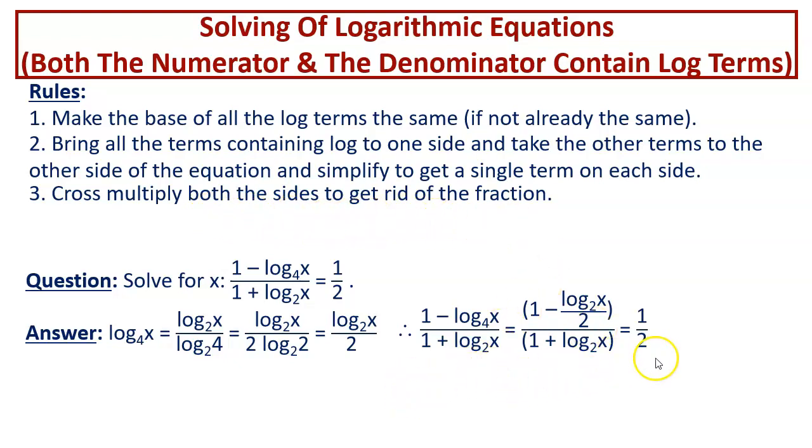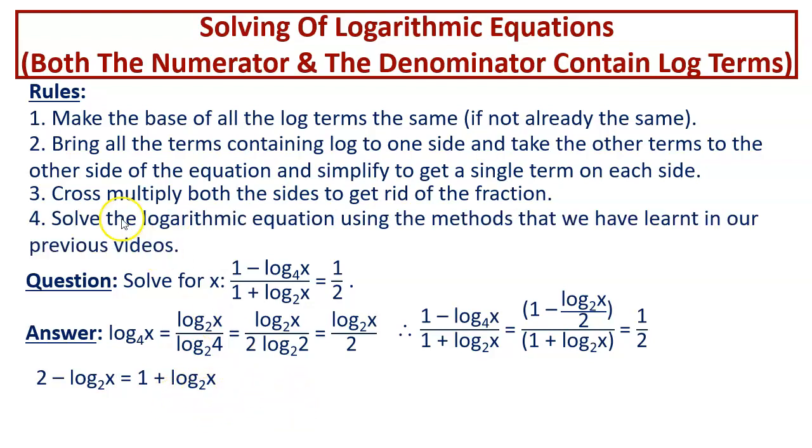So we will be cross multiplying. It becomes 2 times 1 is 2 and 2 times log of x to the base 2 divided by 2. Of course there is this negative sign. It is negative log of x to the base 2. So this is equal to 1 plus log of x to the base 2 and now coming to rule number 4.